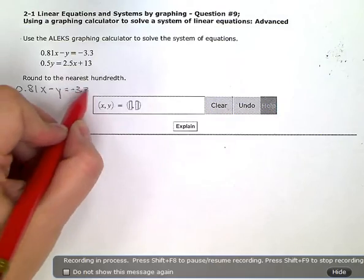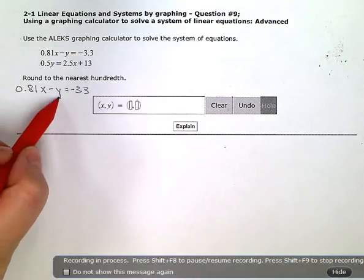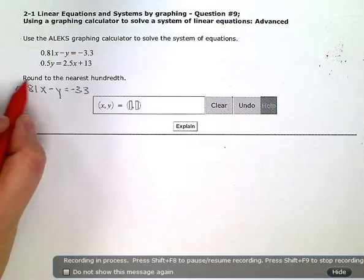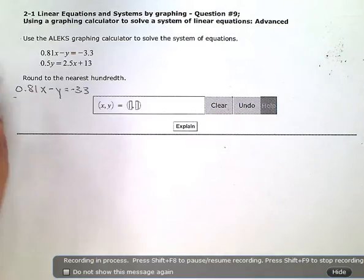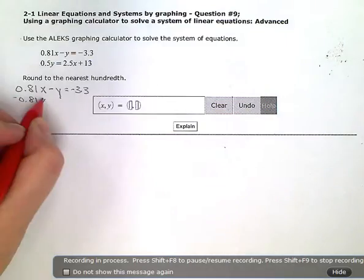So my first equation, 0.81X minus Y equals negative 3.3. If I want to get the Y by itself, the first thing I'm going to do is zero out or eliminate this X term by adding the opposite or subtracting 0.81X from both sides.